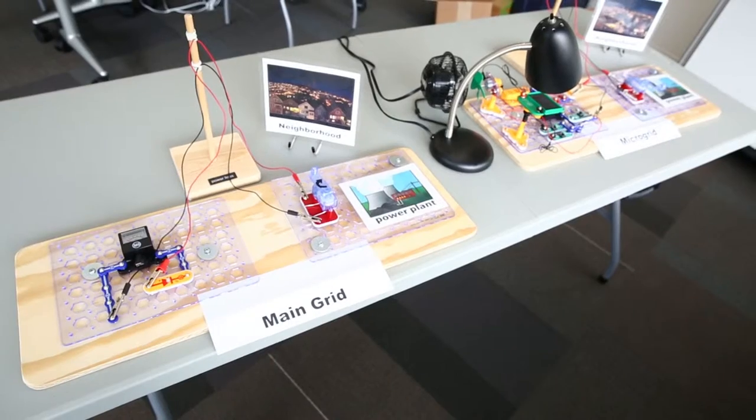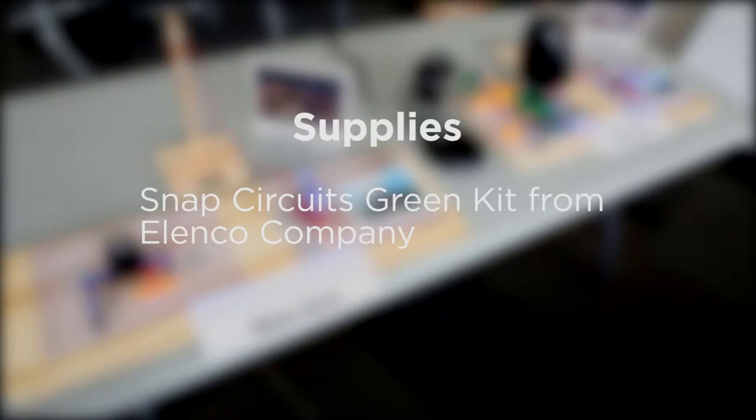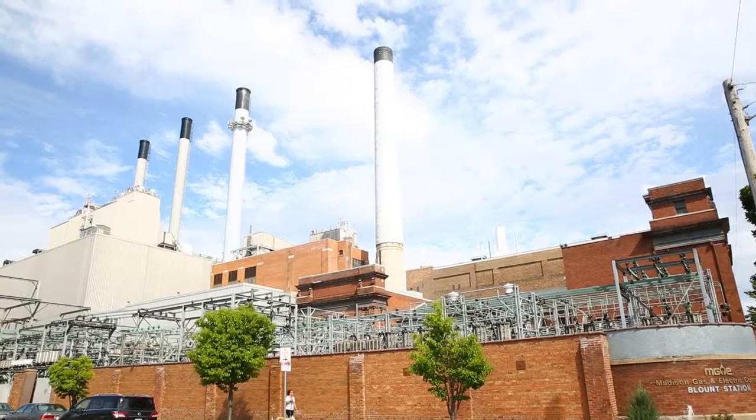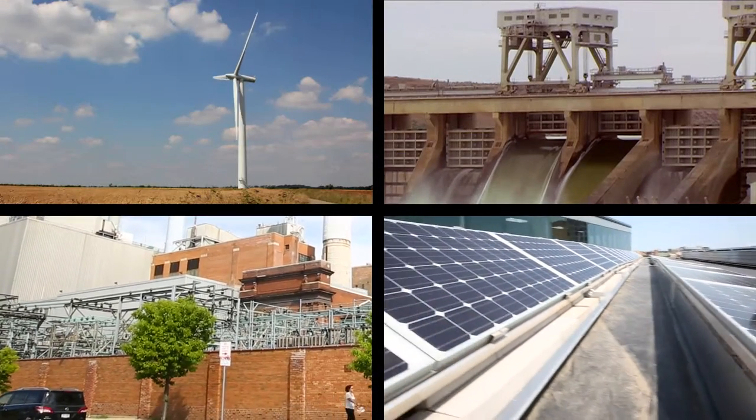The activity that we have developed uses an educational resource called the Snap Circuits Green Kit from Ellen Co. to simulate how different sources of generation work to power communities. We start off the activity by engaging learners in a conversation about where power comes from.